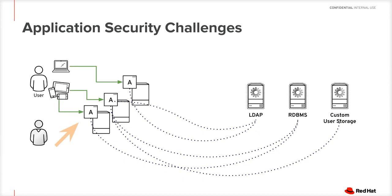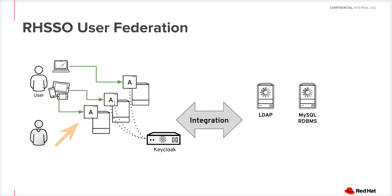A common scenario is that different applications have different user bases, and the underlying user account management systems might be different for each application. Each application layer would have to build a suitable authentication module to handle authentication and authorization against these different user account management systems. This results in redundant authentication modules that are closely tied with each application. Red Hat Single Sign-On user federation capabilities address these concerns and provide a unified way to federate different user account systems.